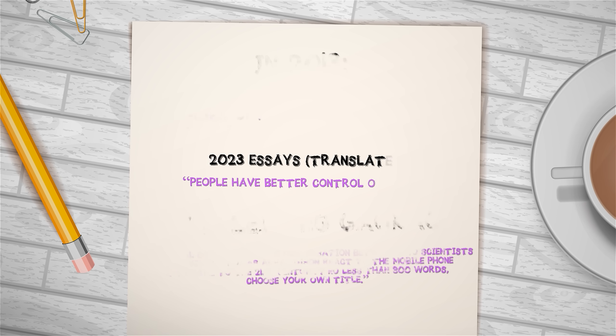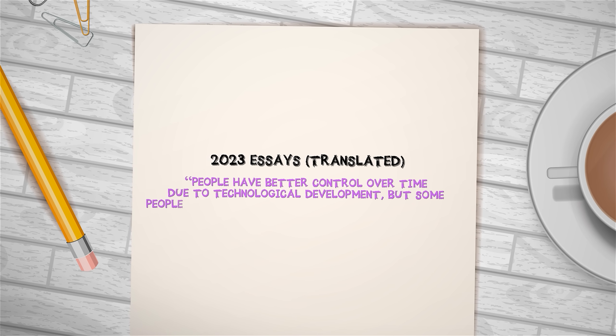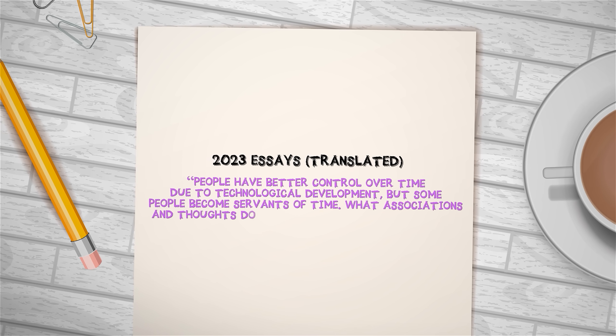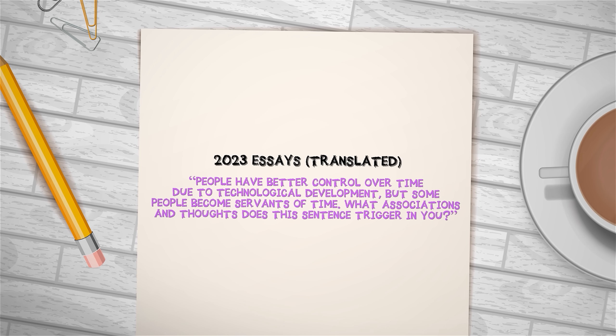And now I actually found a copy of the 2023 essays and used Google Translate to decipher the prompts. Here's how one of them reads. People have better control over time due to technological development, but some people become servants of time. What associations and thoughts does this sentence trigger in you? Now, if those questions blew your mind, you are not ready for what's to come, because we're about to cover the All Souls Fellowship exam.